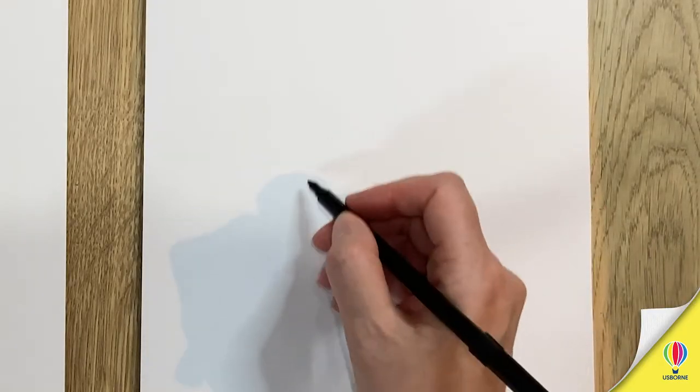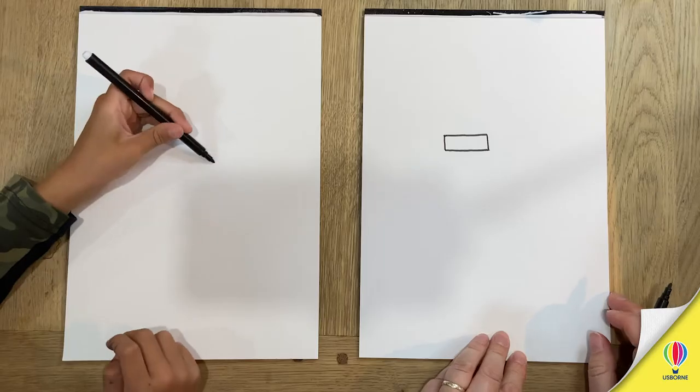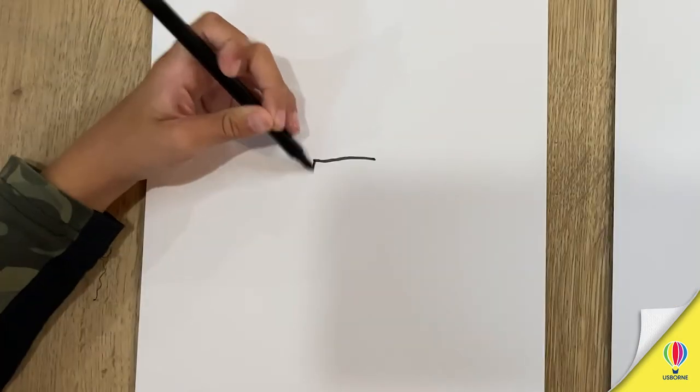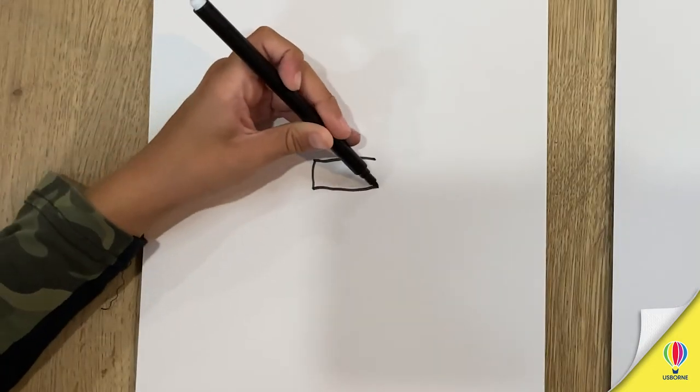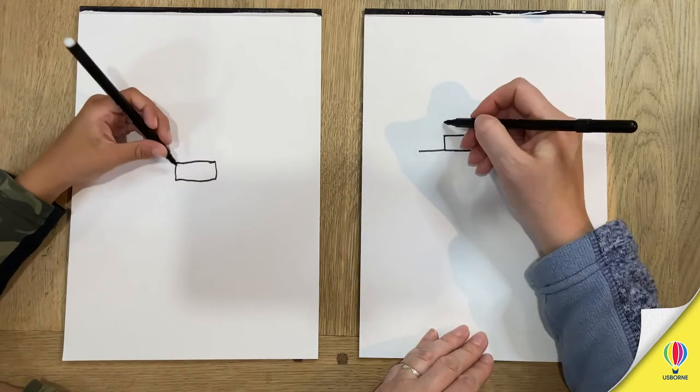Okay right let's get going on our racing car. We need to draw first of all a long rectangle, long rectangle, and then we draw another shape on the back.